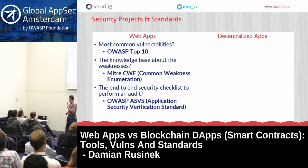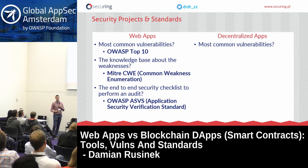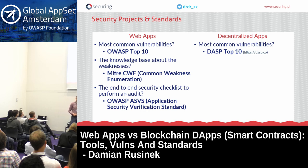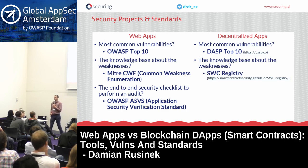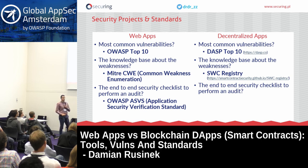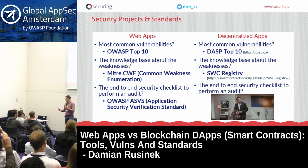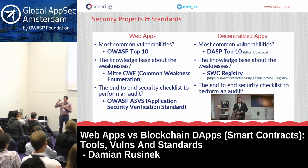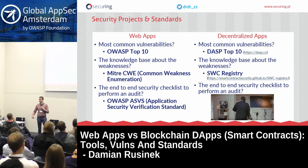For the most common DApp vulnerabilities, there's the DASP Top 10, similar to OWASP Top 10. For a weakness knowledge base for smart contracts, there's the Smart Contract Weakness Classification Registry, very similar to CVE. But for a security checklist covering the whole security of smart contracts? We couldn't find any. There are many publications about smart contract security, but no checklist where you can just say this is passed, this is passed — our contract is secure.